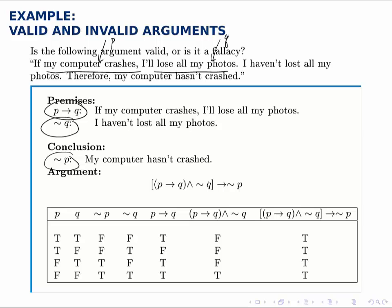So the argument looks like this: P implies Q, and not Q, therefore not P. The truth table is already filled out for us, and notice what we see in the last column — the one for the full argument — is a tautology. So this argument is valid.